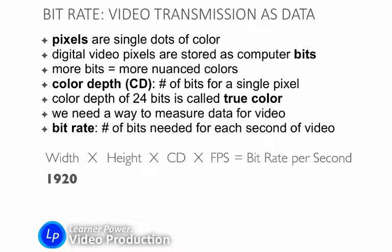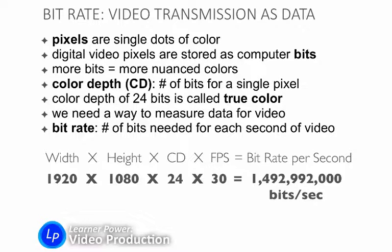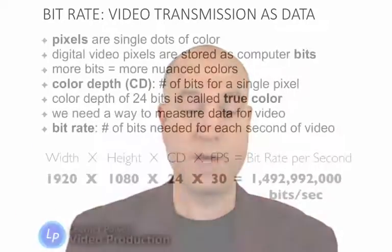Let's plug in some numbers. If we're working with HD 1920×1080p video, the width is 1920 pixels and the height is 1080 pixels. Multiply that times the color depth of 24, because we want true color. Multiply that times the frame rate of 30 frames per second. As you can imagine, this is going to be a big number — and that comes out to 1,492,992,000 bits of data for every second of video. I'm glad we have computers to keep track of this, because my head can't calculate that kind of data.